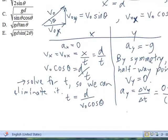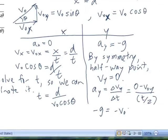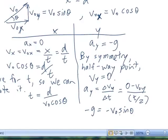So let's just solve that out. We have negative g equals negative V sub 0 sine of theta divided by t over 2.